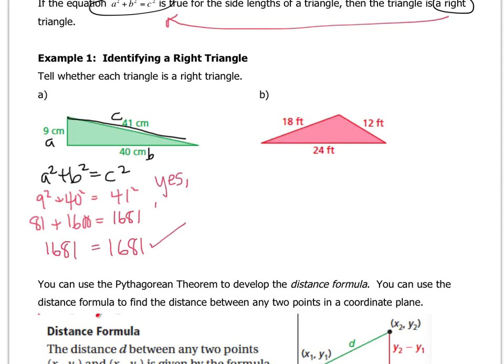We get 1,681 on the left, and that equals 1,681 on the right, so this is a right triangle. One of the cool things about math is that we use symbols to represent words — so I'll use a triangle symbol to represent the word 'triangle.' That's totally acceptable in math class, even if not in English class.